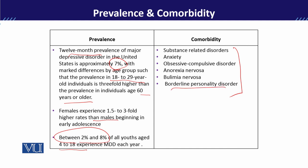Borderline personality disorder is mostly manifest in adulthood — typically in late adolescence and early adulthood, around 18 to 19 years of age. If a child presents, it is important to clarify the diagnosis, as borderline personality disorder involves very rapid mood swings.